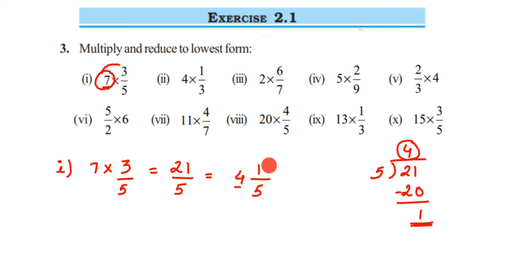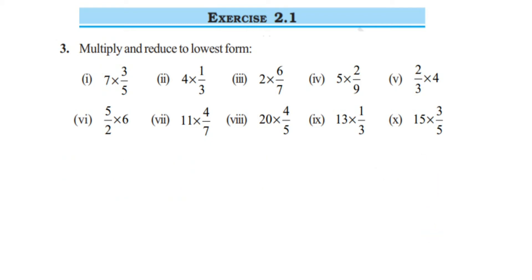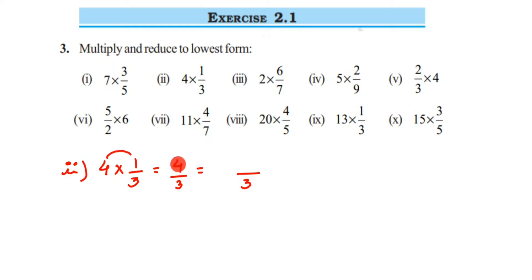Now the second question: 4 into 1/3. Here also we cannot cancel numbers, so just multiply: 4 × 1 = 4, so we get 4/3. This is again an improper fraction, so convert to a mixed fraction. The denominator is 3; the closest number is 3 × 1 = 3. Remainder is 4 − 3 = 1. So the answer is 1⅓.